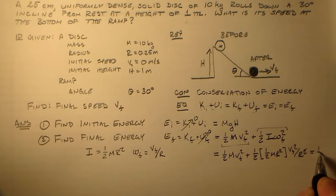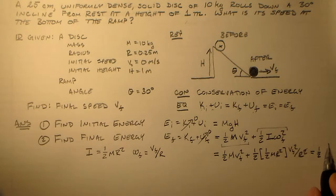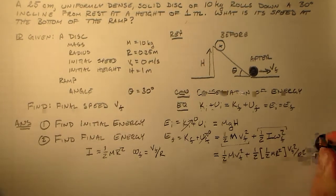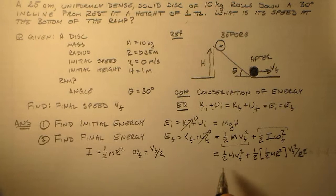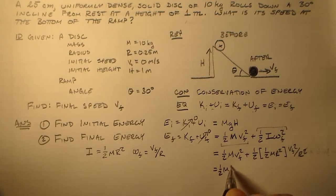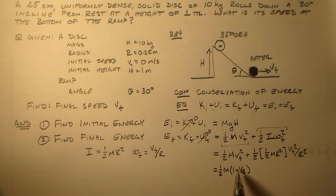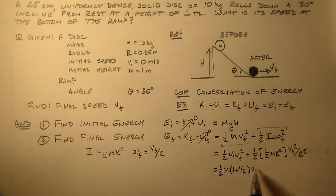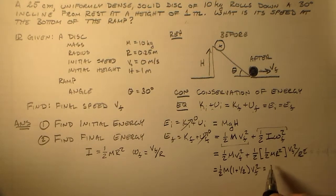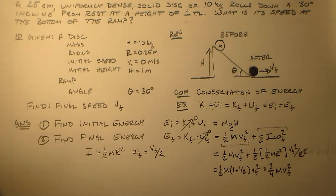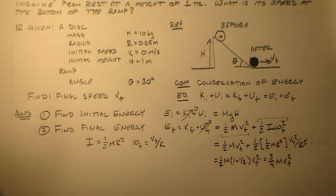And then the one half and the M and the VF squared factor out. So we have one half M one plus one half, which is three halves VF squared. So three halves times one half is three quarters M times the final velocity squared. So that's how we start that off.